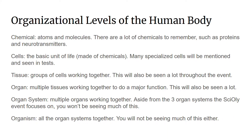Organizational levels of the human body, starting with the smallest and ending with the biggest. Chemicals, or atoms and molecules — there are a lot of chemicals to remember such as proteins and neurotransmitters. If you don't know what those are, I recommend you search it up. Cells are the basic unit of life, made of chemicals. Many specialized cells will be mentioned and seen in the tests, many of them mentioned in the previous slide.